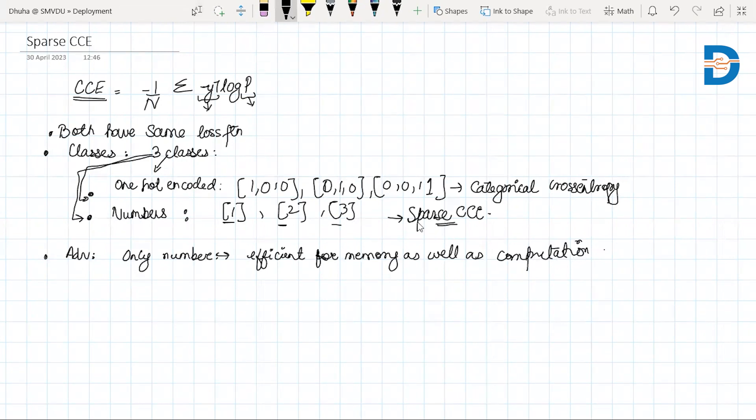That is why preferably wherever you have this kind of scenario we use sparse categorical cross-entropy. Thank you very much.